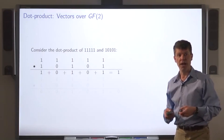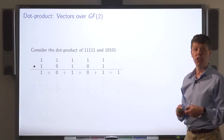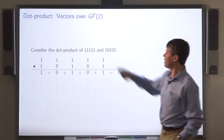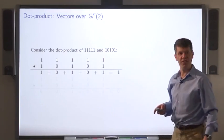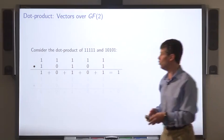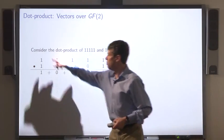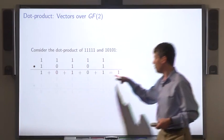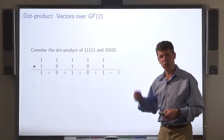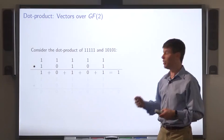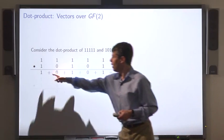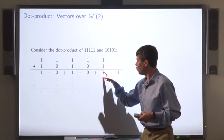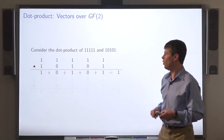Now we'll turn to dot product over GF2. Here's a couple of GF2 vectors, and we're taking the dot product in the usual way. We line them up, multiply corresponding entries, and then add the result. The difference is that we're adding using GF2. So 1 plus 0 plus 1 plus 0 plus 1 ends up being 1.